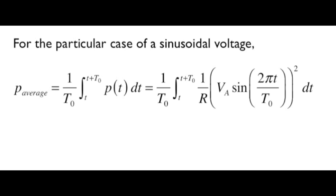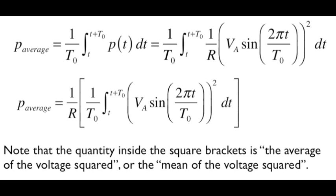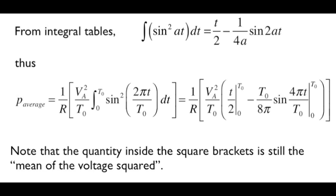But we began this lesson with a periodically varying voltage that was sinusoidal. Let's look now at power and rms concepts in the context of that particular type of periodic function. We may write the average power as 1 over R times the quantity inside the square brackets, which is the integral of a function containing sine squared. The quantity inside the square bracket is the average of the voltage squared. We may wish now to go to the integral tables to help us evaluate the integral of sine squared, which is equal to t over 2 minus 1 over 4a times the sine of 2at. In our case, that lowercase a is 2π over the period.